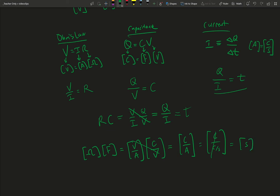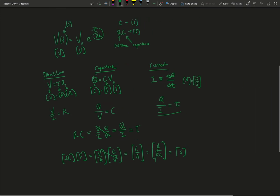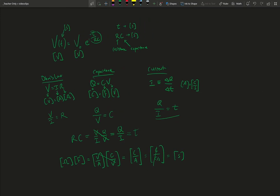So the product of resistance times capacitance gives us seconds, and this is going to go back into that equation that we see for the voltage decay curve for a capacitor discharge circuit. That will be continued in the next video.